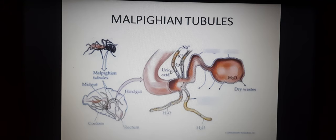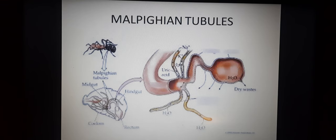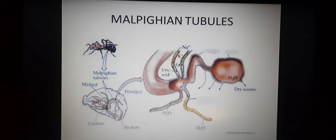Next example is malpighian tubules. These are present just near the gut — after the stomach, there are some finger-like projections called malpighian tubules. These are attached to the gut; one side is blind (closed) and one side is open. They perform the function of excretion and are a primitive type of nephron. Malpighian tubules are mainly found in insects.